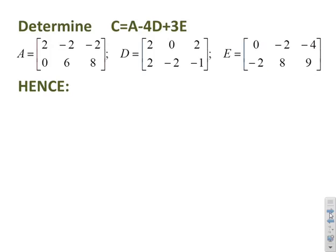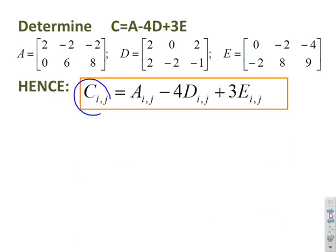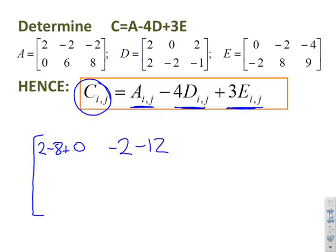Here's a question. Determine C equals A minus 4D plus 3E. By definition, for every coefficient C_ij equals A_ij minus 4D_ij plus 3E_ij. It might be tedious, but if I start at the top, I'm going to get 2 minus 8 plus 0. That's the first coefficient. If I do the next coefficient, I'm going to get -2 and then -12. Wait, I made a silly mistake there in the middle one. It should have been -6.